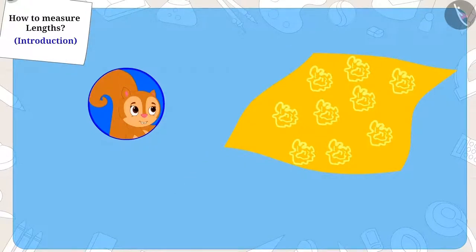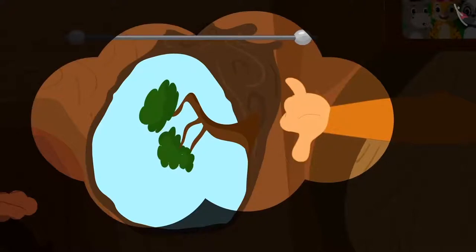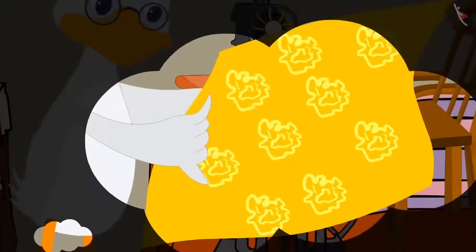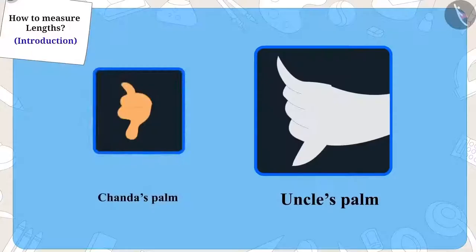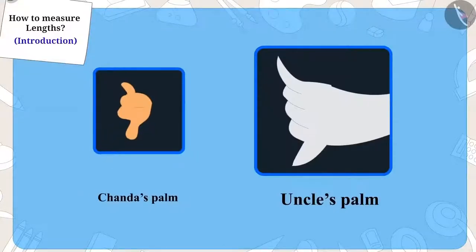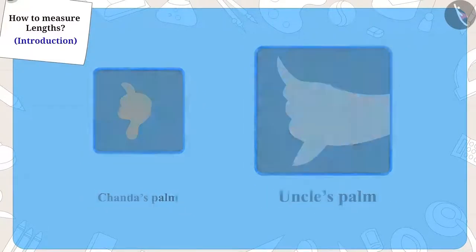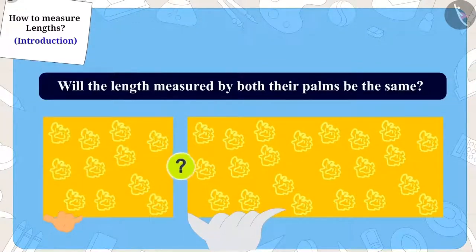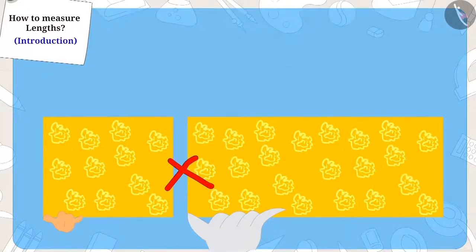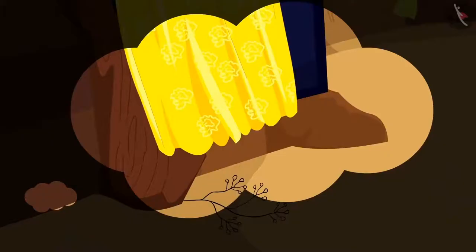Yes, you are right. Chanda measured the window using her palms, and while giving the cloth, uncle had measured the cloth using his palms. Now Chanda's palms are so small and uncle's palms are so big. So will the length measured by both their palms be the same? No, that is why Chanda's window curtain reached the floor.